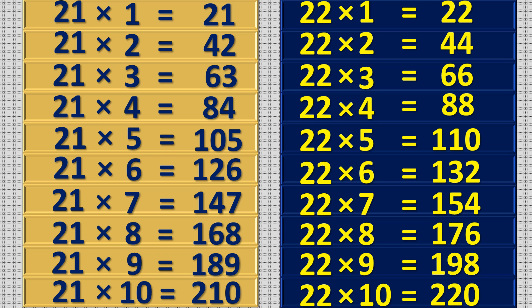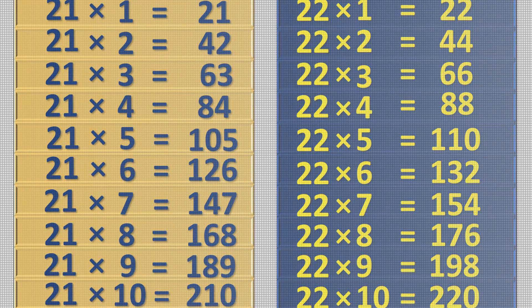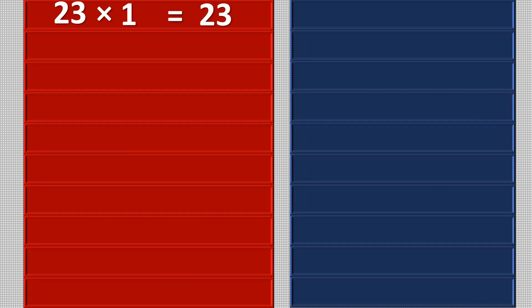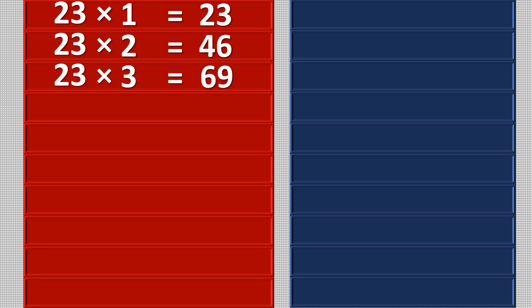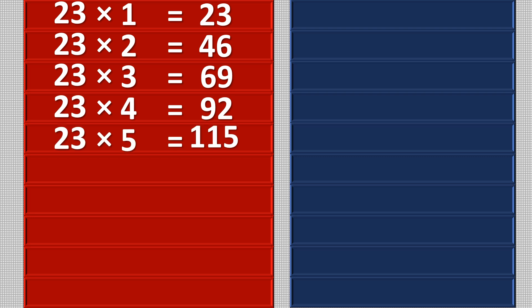23 1s are 23, 23 2s are 46, 23 3s are 69, 23 4s are 92, 23 5s are 115.